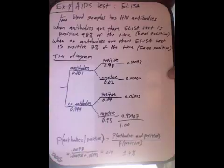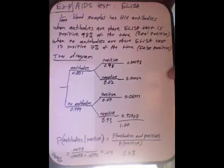This is actually kind of an interesting real-life situation too. It's about AIDS testing. If we assume that one out of every thousand blood samples that these people are testing has HIV antibodies in it, meaning it came from an HIV positive person.